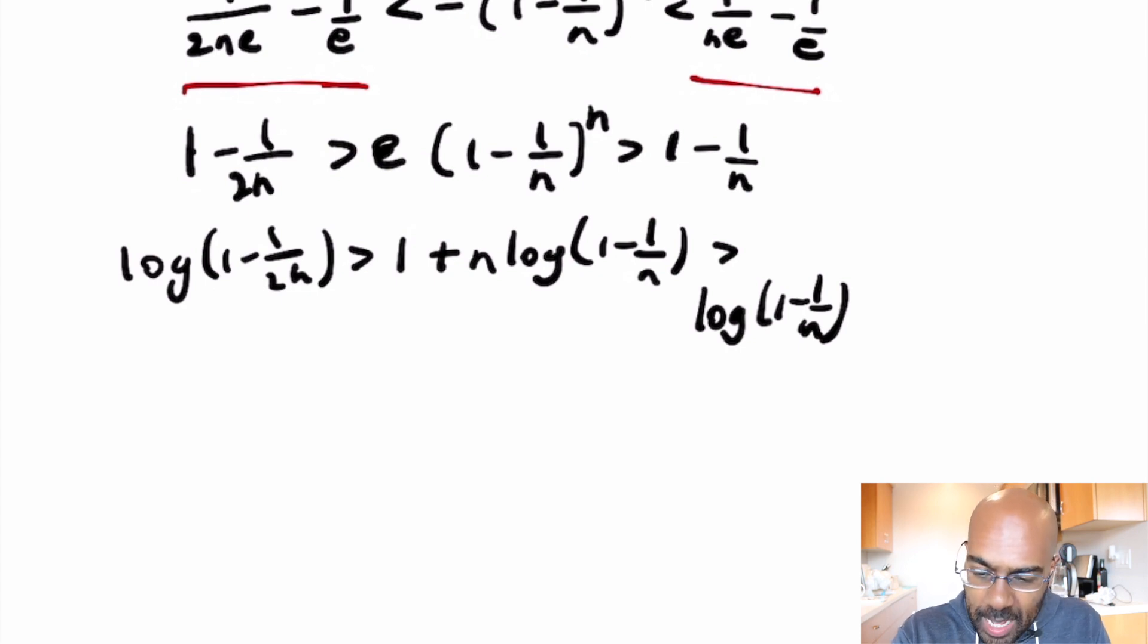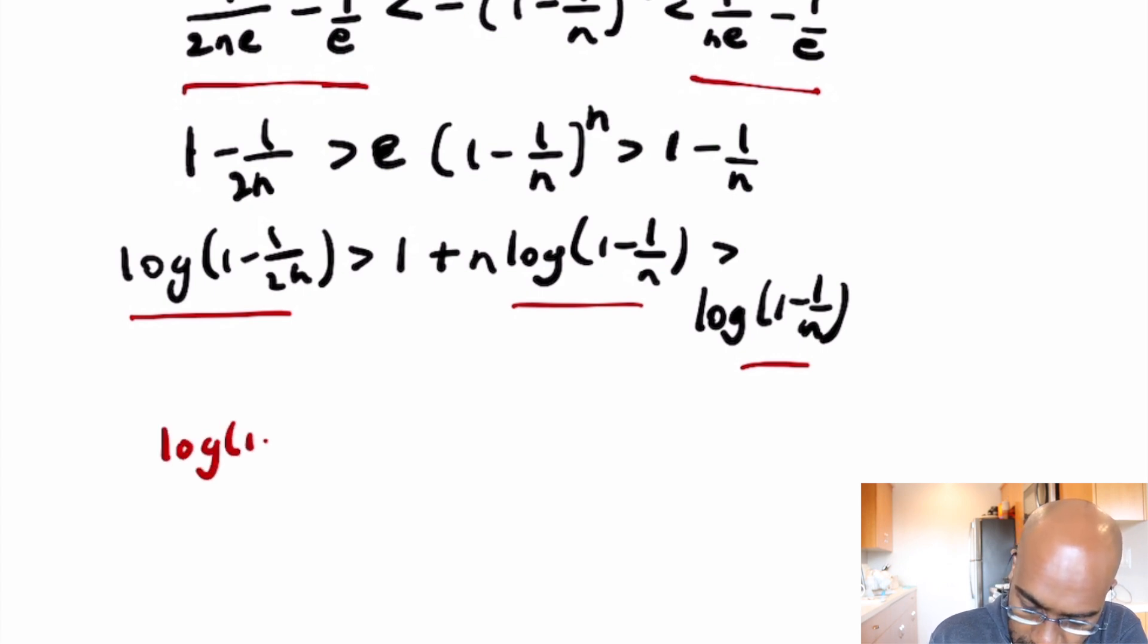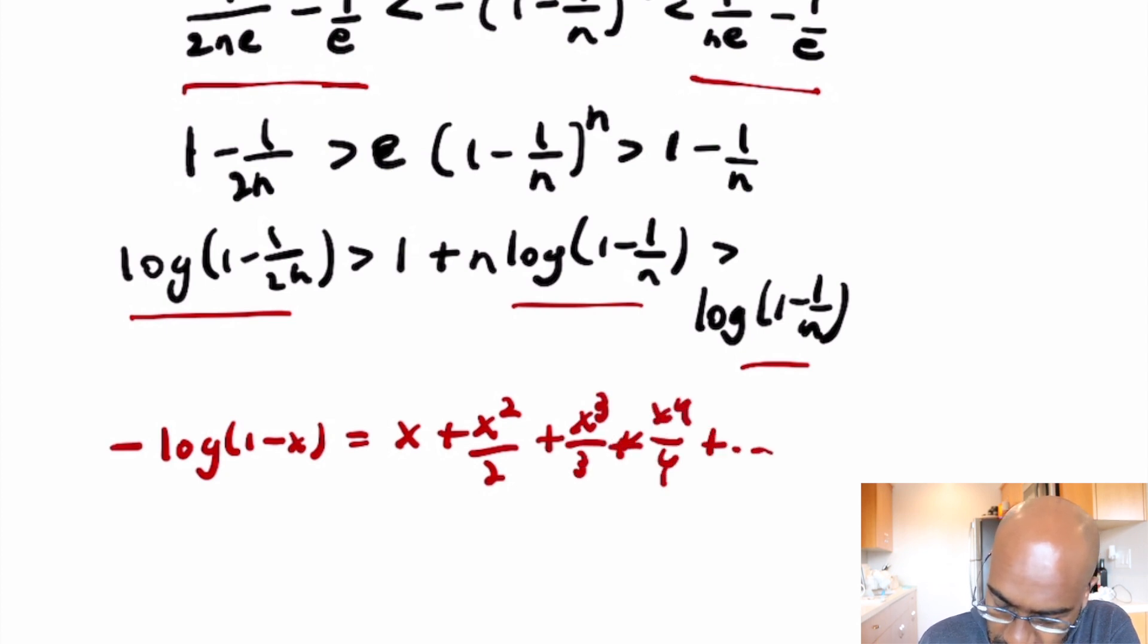Okay, now how do we actually compare these? At least we have these in a uniform fashion. One thing we can do is exploit the fact that the logarithm of 1 minus x actually has a predictable Taylor series expansion. The negative of this actually expands to x plus x squared over 2 plus x cubed over 3 plus x to the fourth over 4, etc. This converges for the values of x that we have in our expressions, namely 1 over 2n and 1 over n. These are small values that are positive.